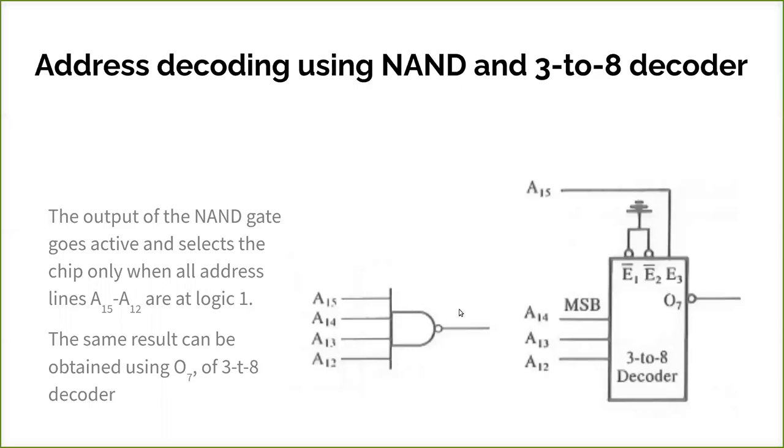In this video, we are going to see how to decode the remaining address lines, the excessive address lines, in order to select a chip among the given number of chips. How to select a particular chip using the excessive address lines. You can select it using a NAND gate and a 3-to-8 decoder. If you select a NAND gate, then if we give all as one, then the output will be zero.